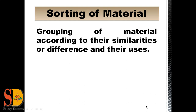If we make a window with wooden material, then we can't see outside when the windows are closed. Similarly, if our table is made of cloth, the cloth material would not bear the weight of things placed on the table. That's why glass or wooden material is used to make tables. So these all depend upon the properties of materials and their uses.